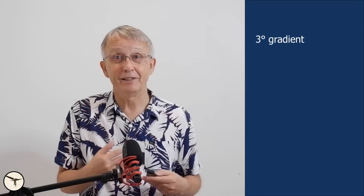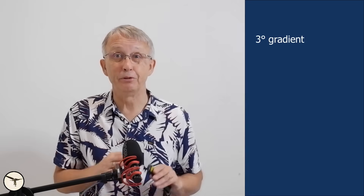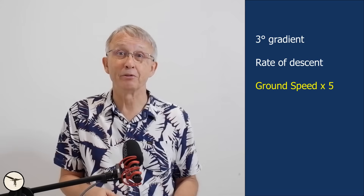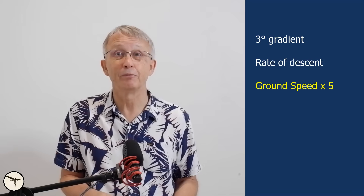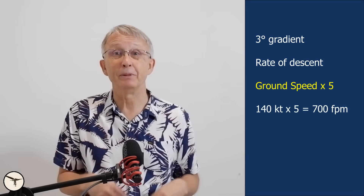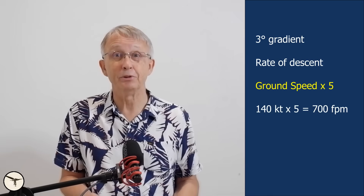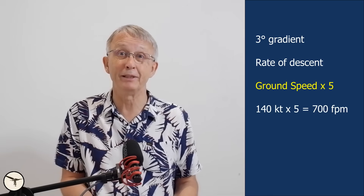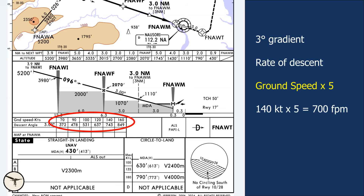Rule 2: When flying a 3-degree descent, there is a useful rule of thumb for estimating your required rate of descent. Simply multiply your ground speed in knots by 5. For example, if your ground speed is 140 knots, your target descent rate should be approximately 700 feet per minute. While the exact value is slightly higher, as indicated on approach charts, this quick calculation is accurate enough for practical use during most approaches.